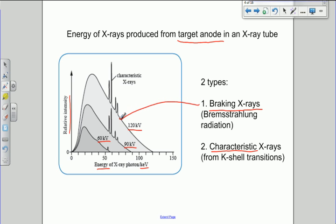The braking X-rays produce the typical, I shouldn't say characteristic because that's what the other ones are called, the typical smooth continuous distribution. The characteristic X-rays form these spikes.